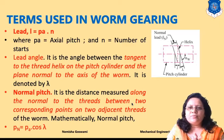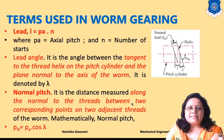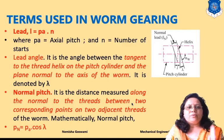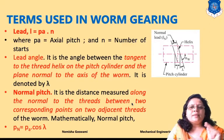The lead angle is the angle between the tangent to the thread helix on the pitch cylinder and the plane normal to the axis of the worm. As you can see in the diagram, a tangent is drawn to the thread helix, and the angle between that tangent and the perpendicular to the worm axis is the lead angle.